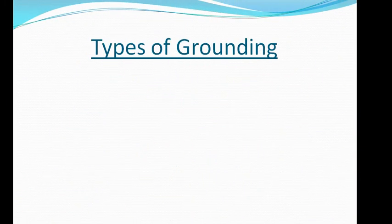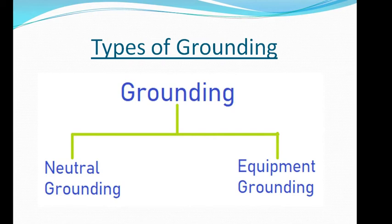There are two types of grounding systems in electrical power system networks: one is neutral grounding and another is equipment grounding. In neutral grounding, three-phase AC power systems with neutral grounding at every voltage level are used for generation, transmission, distribution, and utilization. The neutral point or star point of star-connected three-phase windings of a power transformer, generator, motor, or earthing transformer is connected to a low-resistance ground. Such a connection is called neutral grounding or neutral earthing.